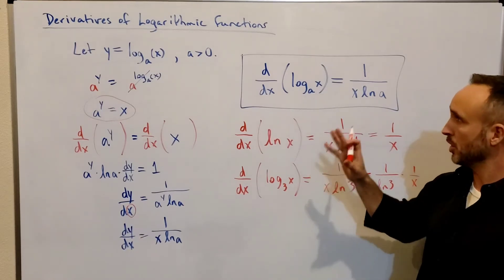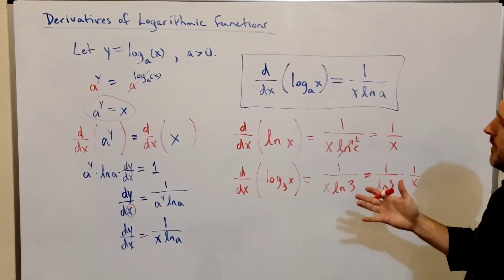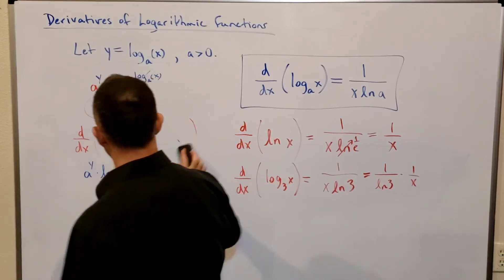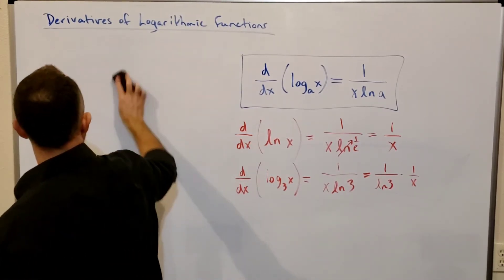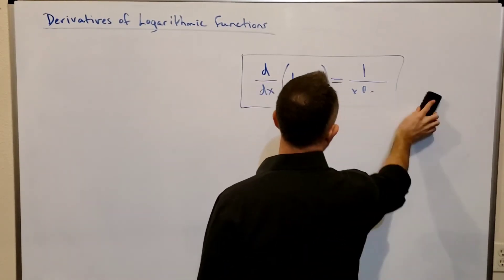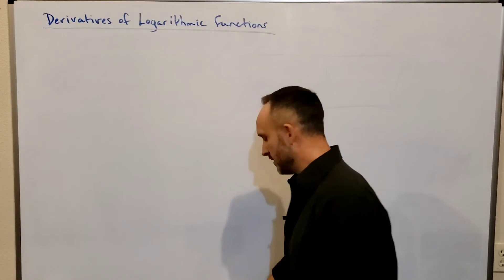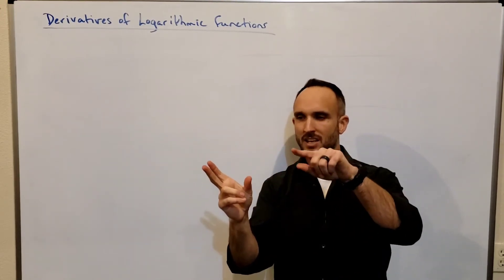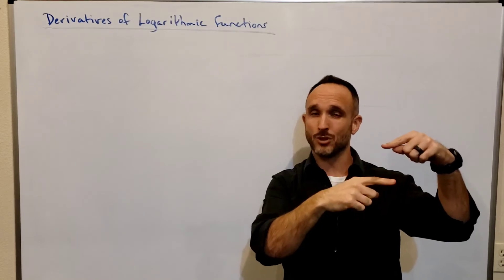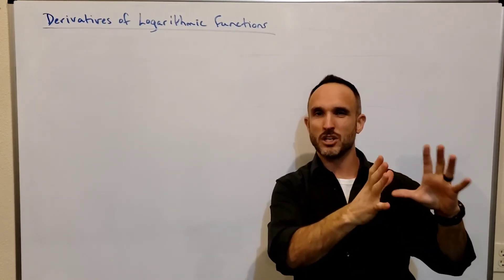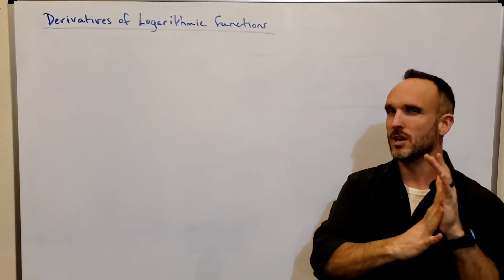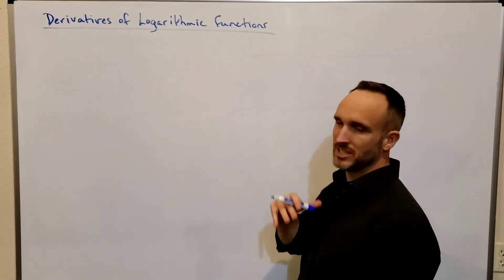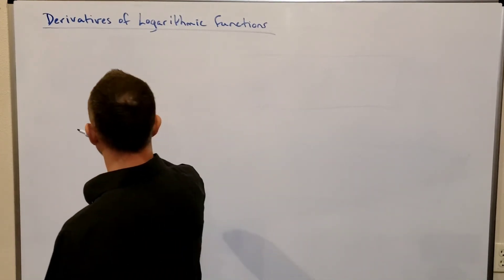Let's do more examples where we use the chain rule, the product rule, the quotient rule, and other differentiation rules. As a side note, you could also take any log base a of x, rewrite it using a change of base formula with natural log, and then differentiate using the known derivative of the natural log function — that yields the same results. Now let's do an example.